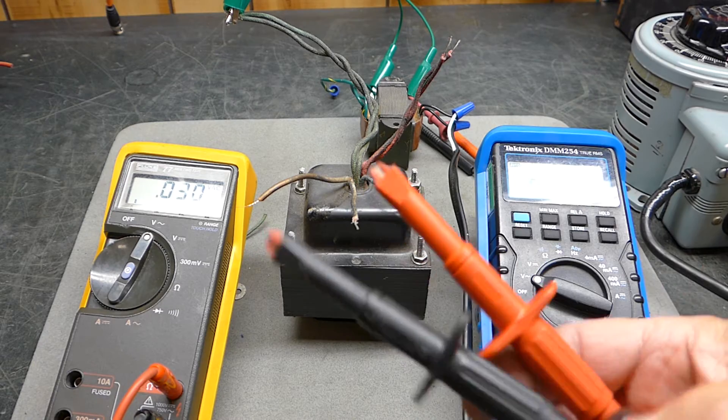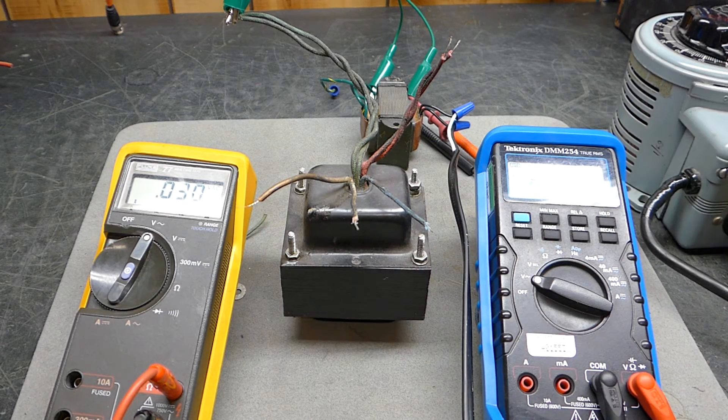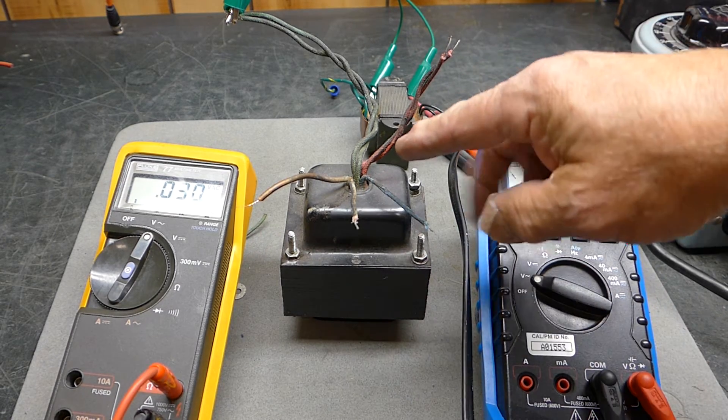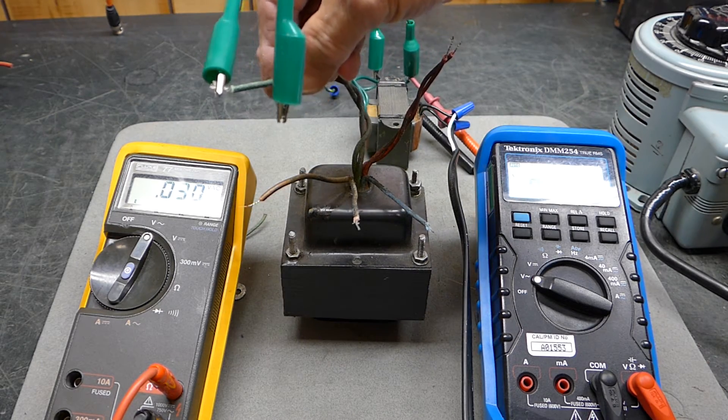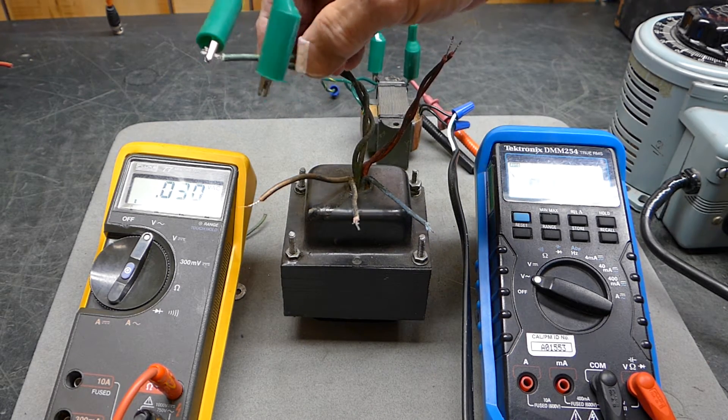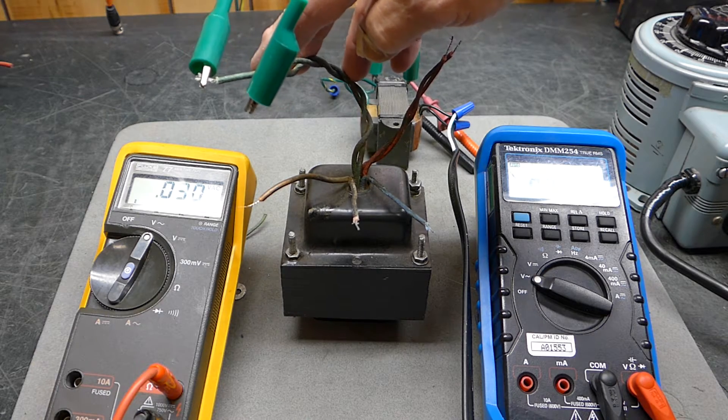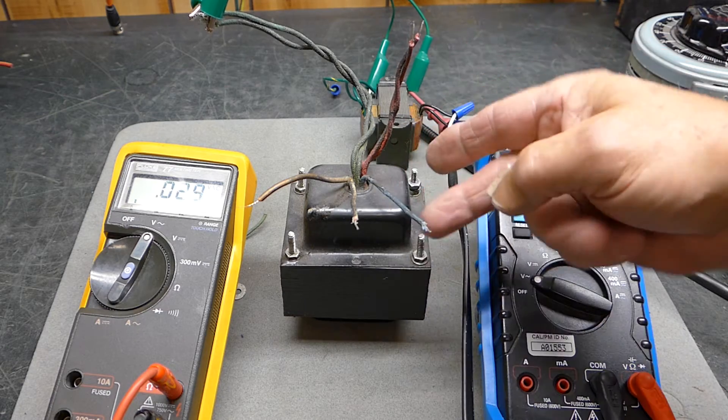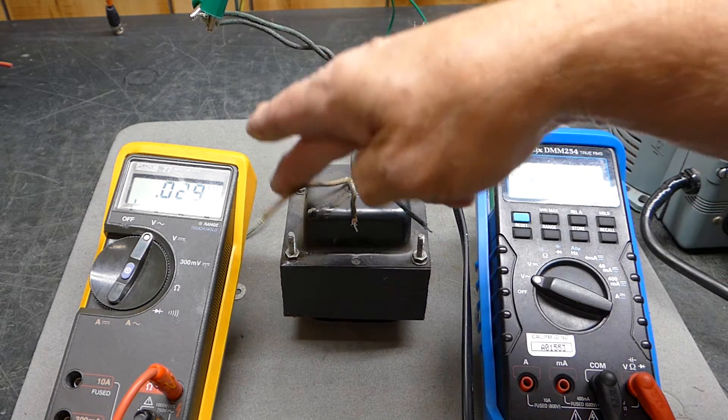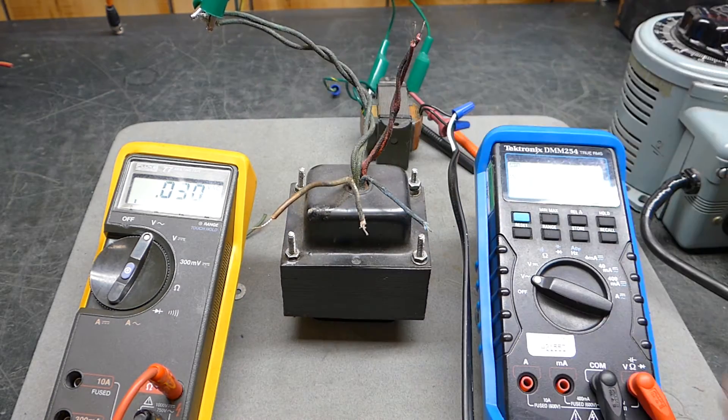We can look at this transformer, and from experience we can see these are some pretty heavy green leads - that looks like a 6.3 volt filament lead to me. The two reds look like high voltage, and this blue, white, and brown I have no idea.